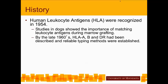Around 1954, we recognized there were proteins on the cell surface of all cells called human leukocyte antigens, or HLA. Early studies in dogs showed we had to match these proteins between donor and recipient. By the 1960s, some of these proteins were defined. They have names — HLA-A, B, and DR — and we put numbers on all the different proteins. These proteins have to be matched between donor and recipient for the transplant to engraft.